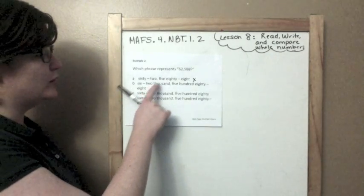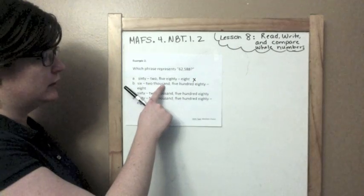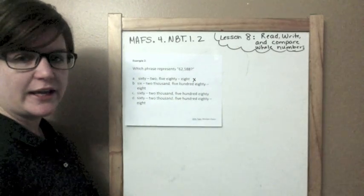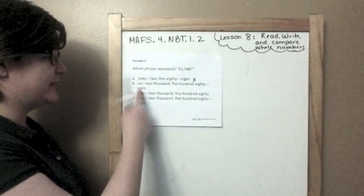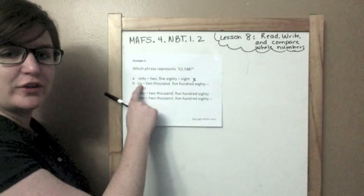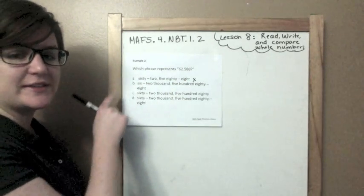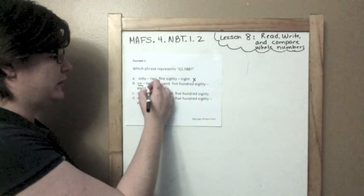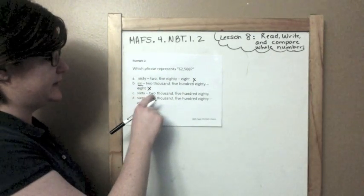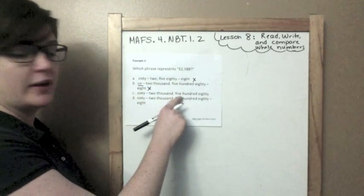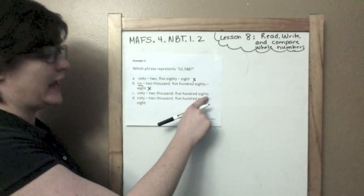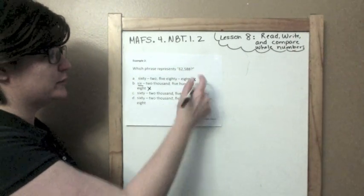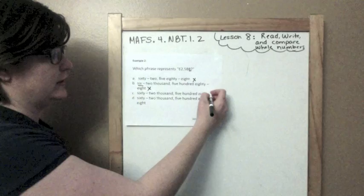B, 62,588. Some kids would pick this because they see the 6 and the 2, and they're reading too quickly, and they're reading 62, but it only says 62. That is wrong. That's close, but they left off this 8 right here. That one's wrong.